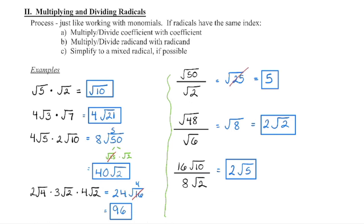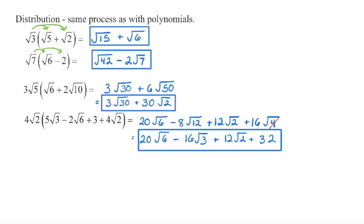For the next division example: 1 divided by 1 is 1, and 48 divided by 6 is 8. We can divide a 4 out of there — the square root of 4 is 2, and we're left with 2 in the radicand. Then 16 divided by 8 is 2, and 10 divided by 2 is 5. There is no perfect square in 5, so that is our final answer.